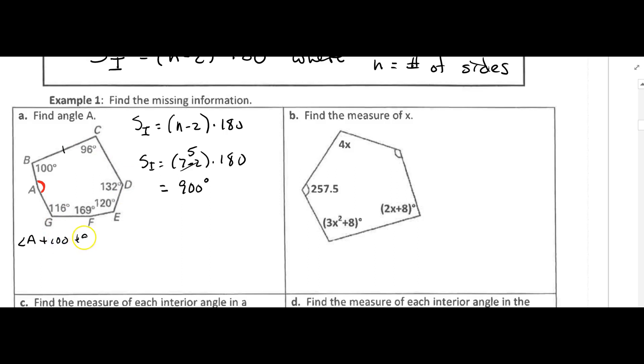So I know that angle A plus all the other angles, 100, plus 96, plus 132, plus 120, plus 169, plus 116. That's all the interior angles we figured out. It has to equal 900. So let's combine our large terms.